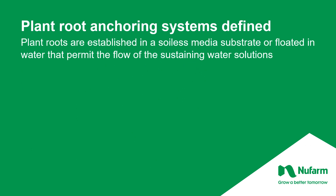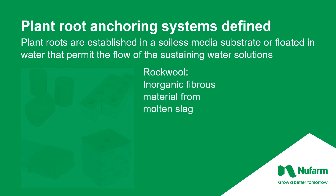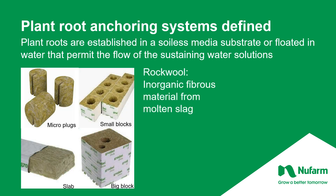Plant roots are established in soilless media substrates or floated in water that permits the flow of sustaining plant solutions. One of the original materials used for rooting and holding the plants is rock wool, which is an organic fibrous material from the molten slag byproduct of steel production. They come in various sizes — microplugs, small blocks that are packaged, large blocks which are self-sustaining and pre-dibbled for drip line systems, plus the original slabs used in gutter or tray systems to grow tomatoes and other vegetables in major greenhouse operations for controlled environmental food crop production.